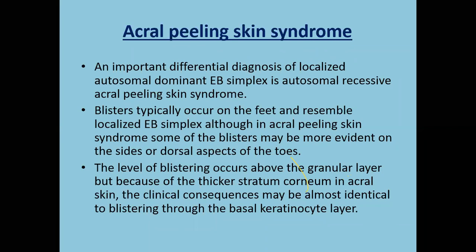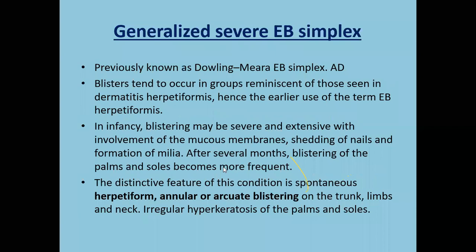Acral peeling skin syndrome shows blisters more evident on the dorsal aspect of toes and not on the sole. The blistering is very superficial — above the granular layer or subcorneal. Since the stratum corneum is very thick on palms and soles, even if the blister is subcorneal, the blister is tense. Generalized severe form of EB simplex — previously called Dowling-Meara but this eponym is no longer used — is also called EB herpetiformis because the vesicles or blisters are grouped, as seen in dermatitis herpetiformis. Blistering may be severe and extensive with involvement of mucous membranes.